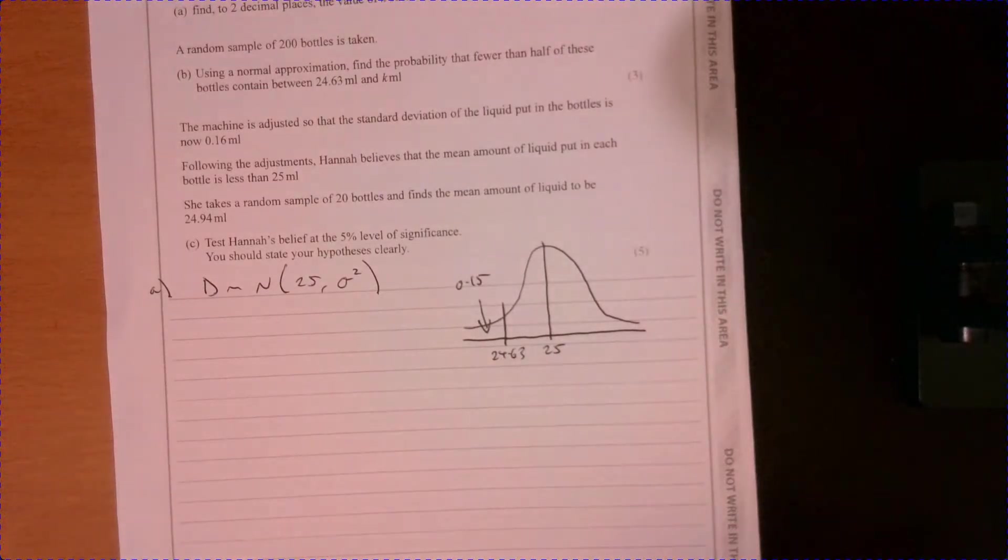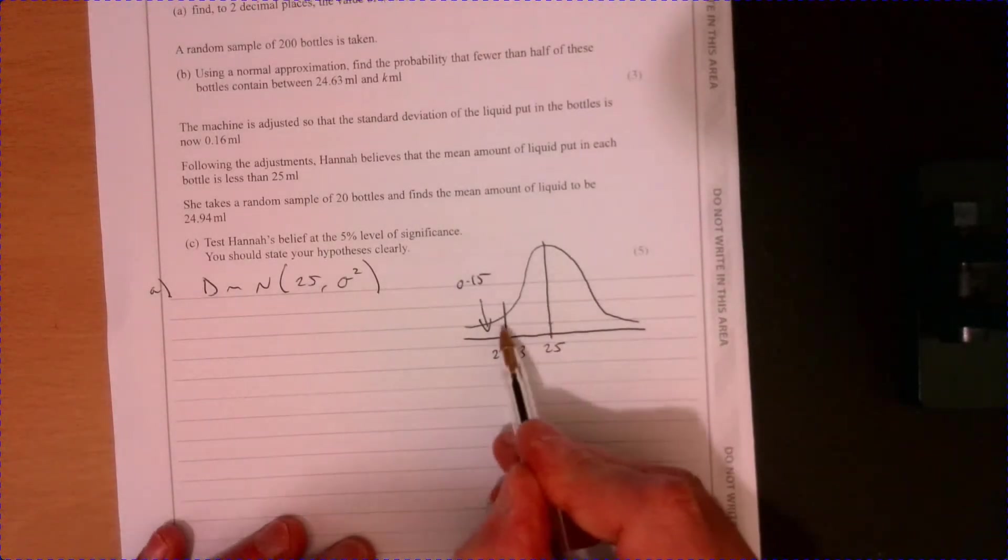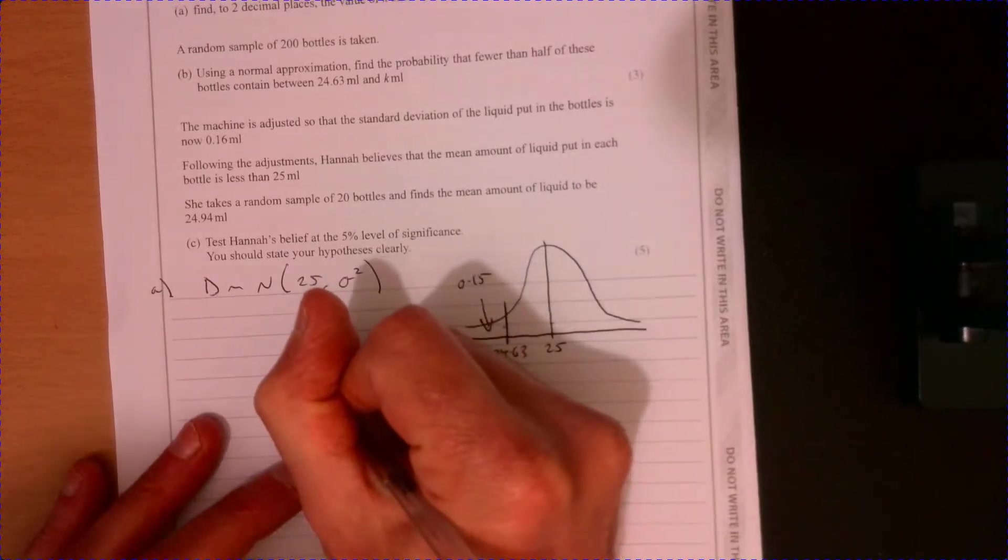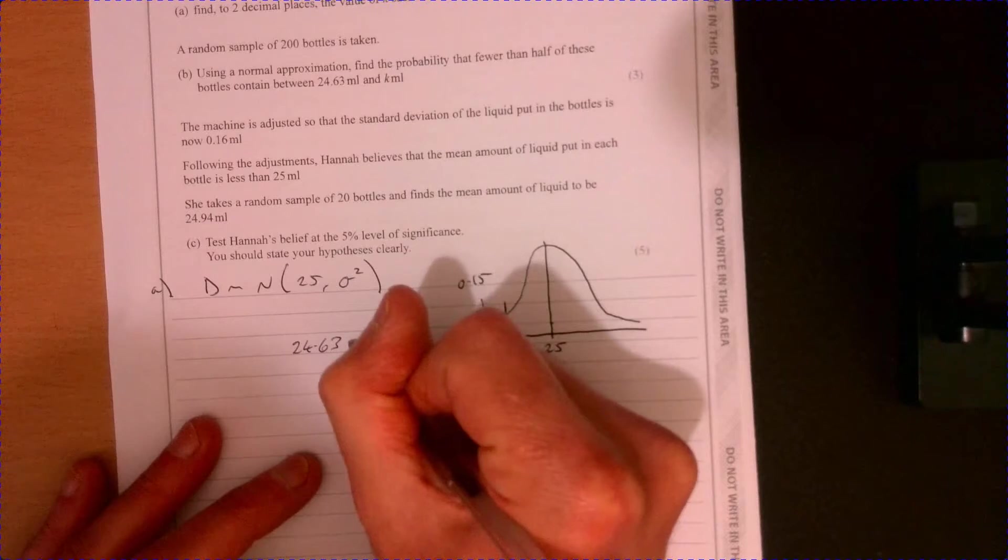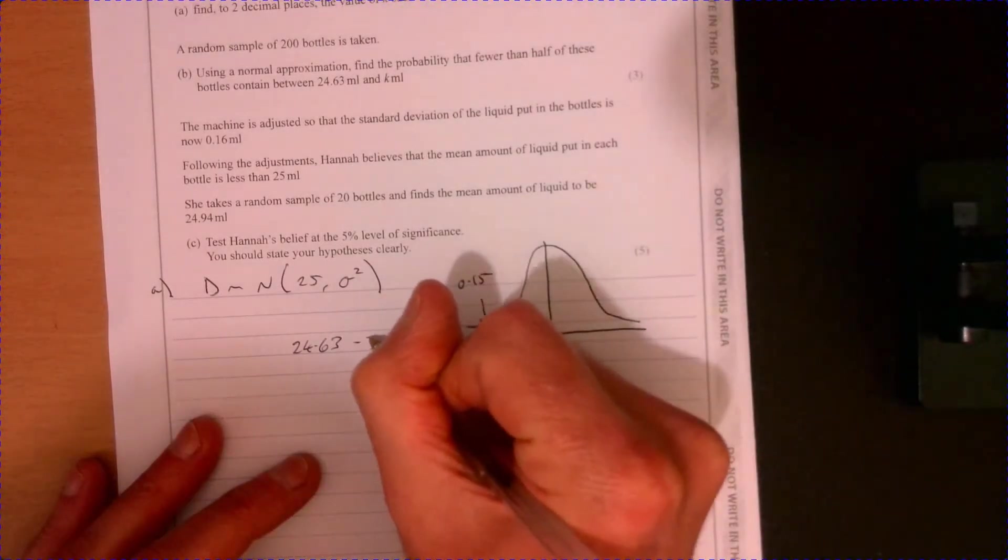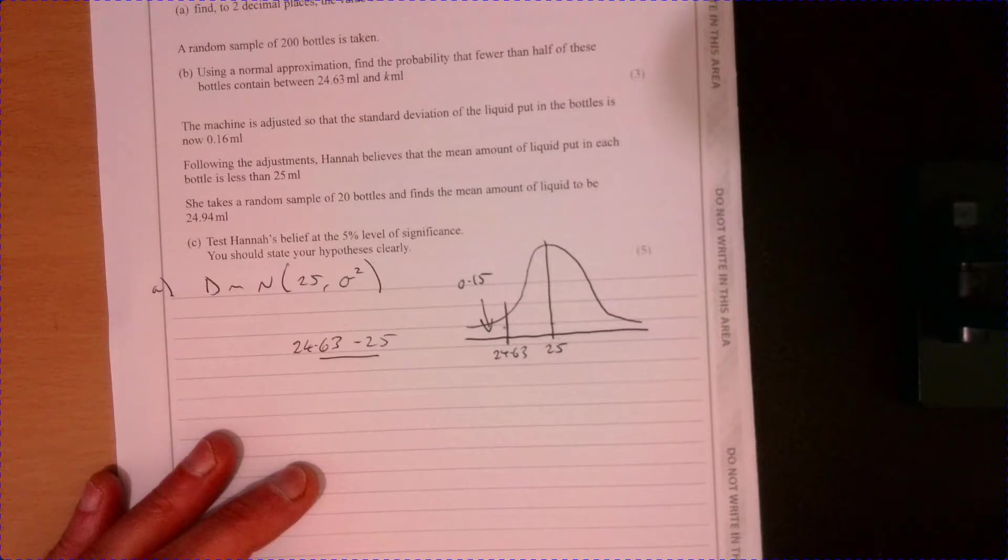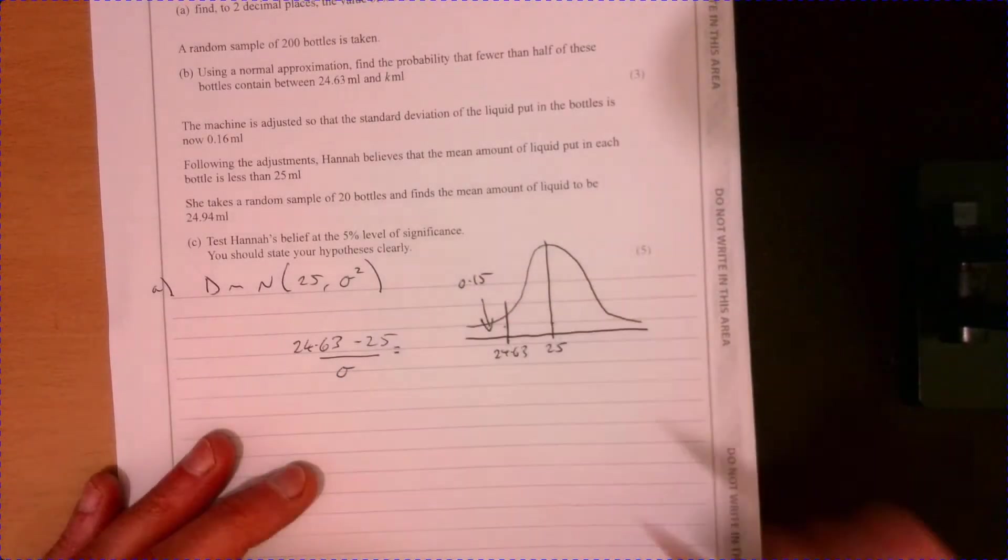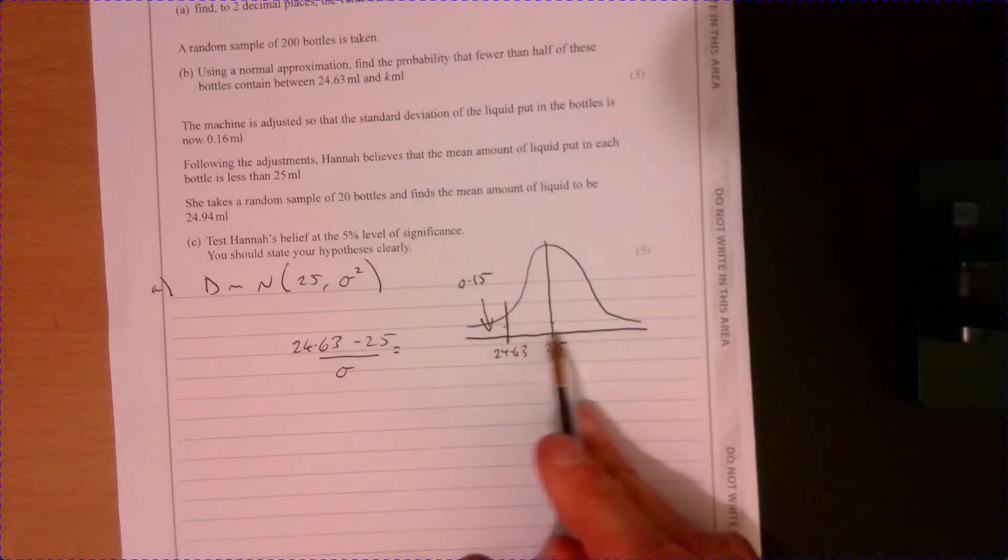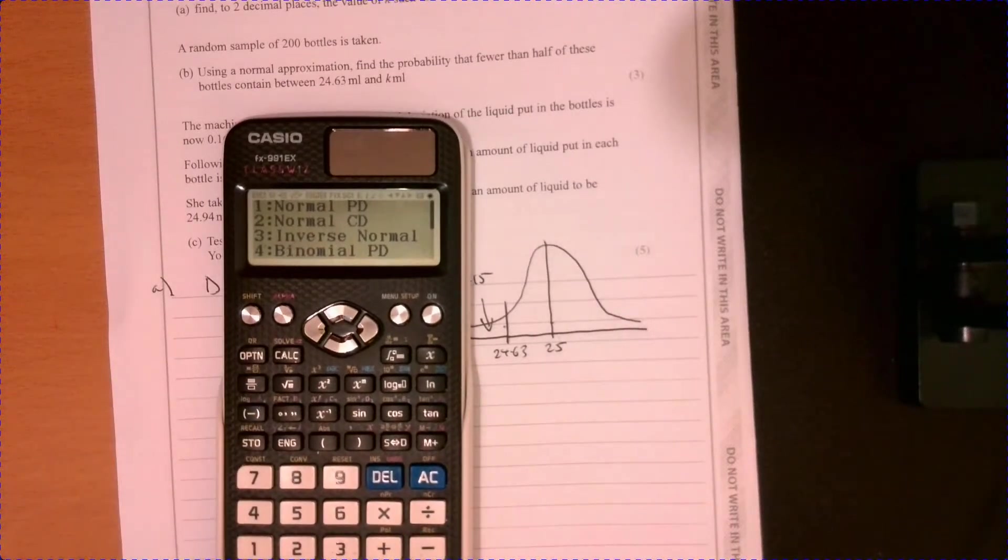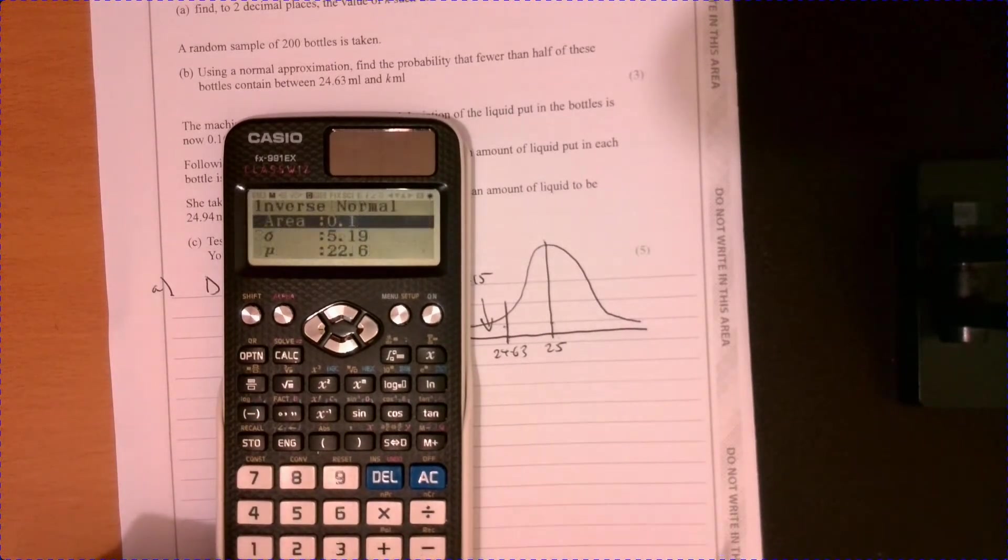What this will enable me to do is to work out how many standard deviations we are below the mean. So what we need to do here is if we think about our 24.63 and take away our 25, so actually just thinking about the gap involved divided by the standard deviation. I need to know how many standard deviations we are below the mean. The easiest thing to do here is on your calculator, just do an inverse normal.